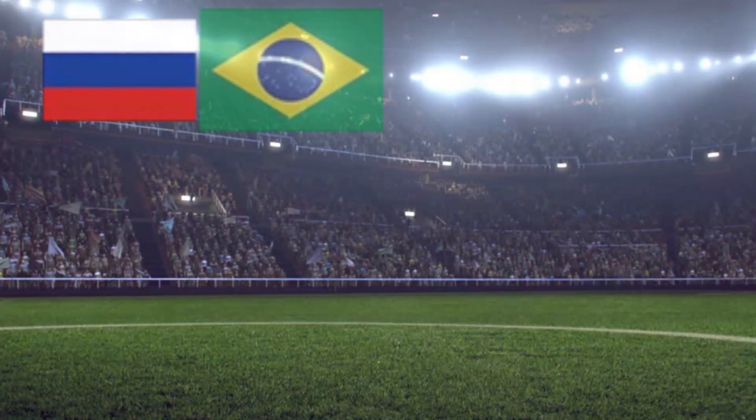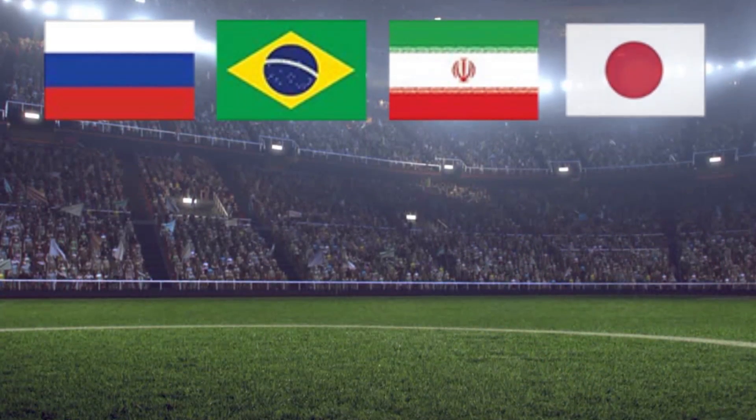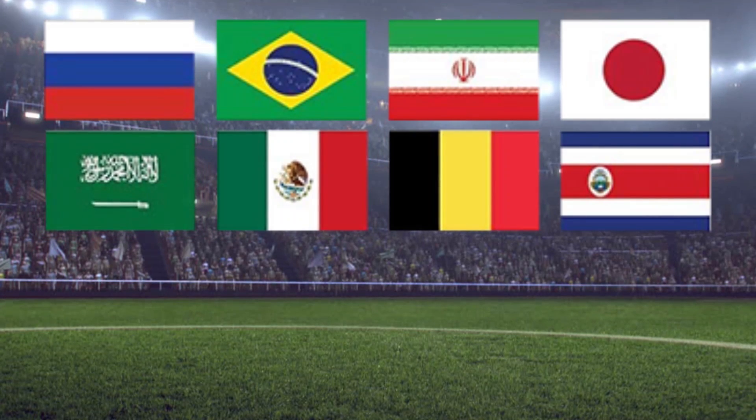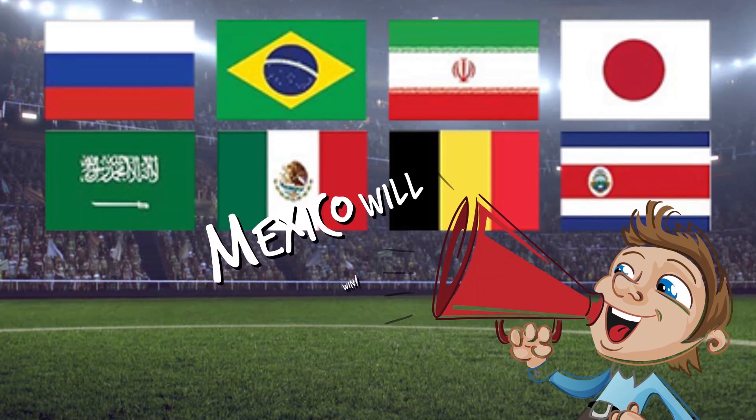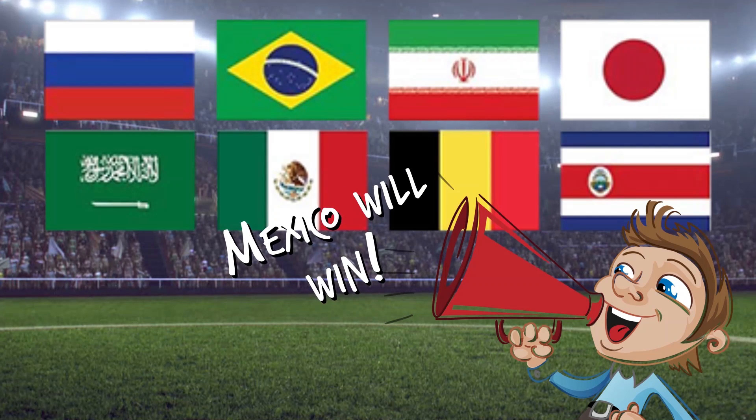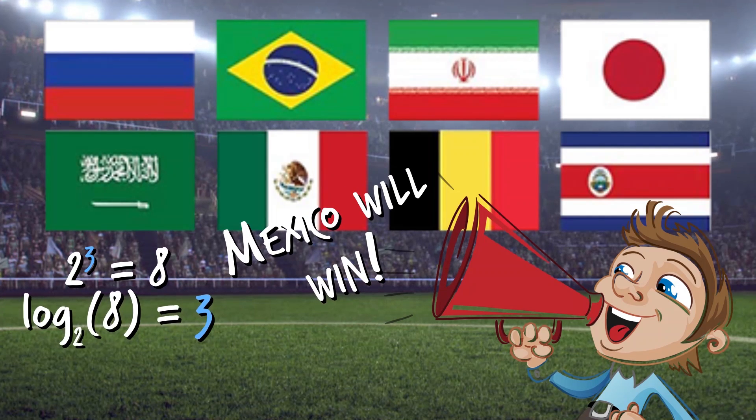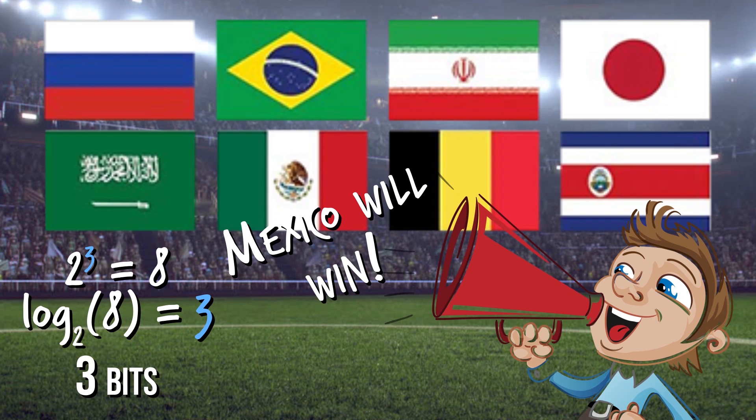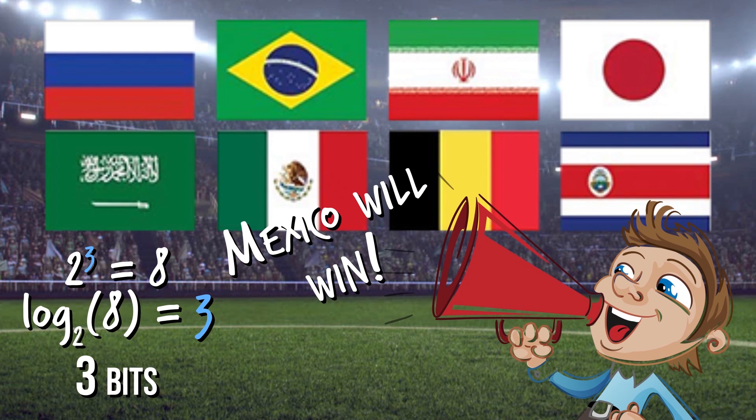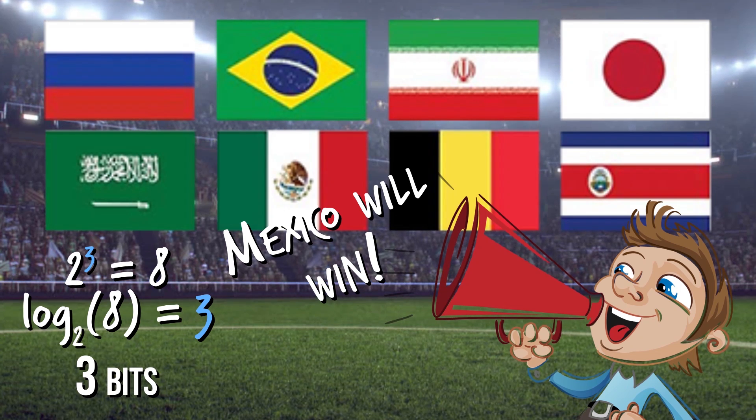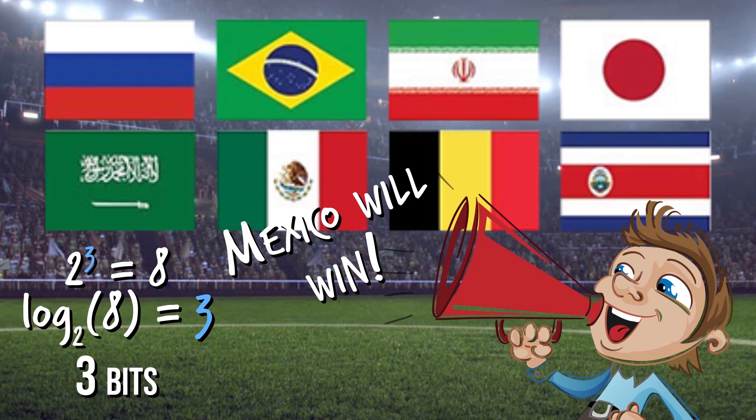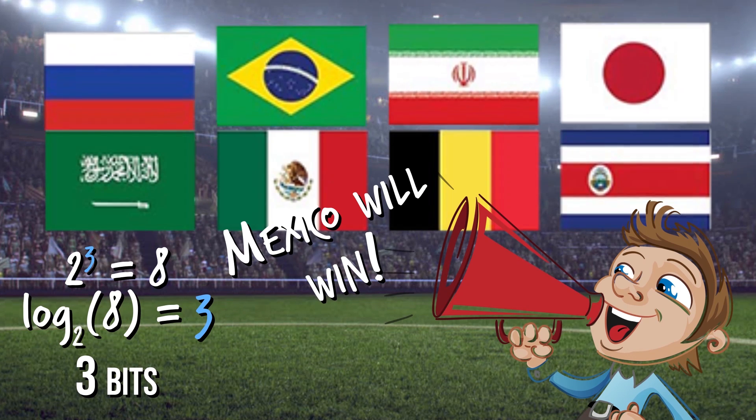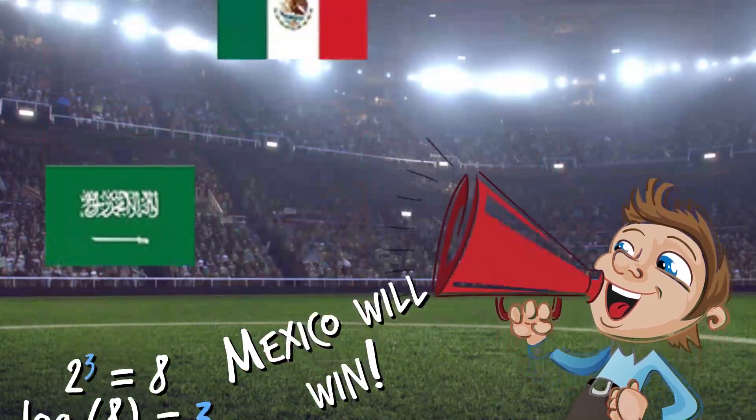Suppose there were eight possible teams that could win the World Cup, all equally likely. If the service tells us the likely team to win, they're dividing our uncertainty by a factor of eight, which is two to the power three, so they sent us three bits of useful information. We can compute the number of bits that were communicated by computing the binary logarithm of the uncertainty reduction factor, which is eight in this example.